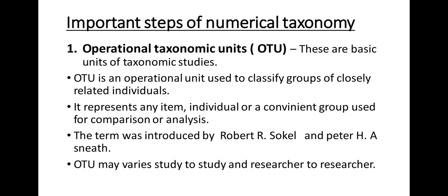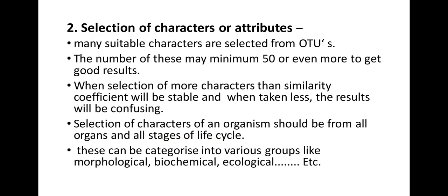Important steps of numerical taxonomy begin with Operational Taxonomic Units (OTUs), which are the basic units of taxonomic studies. An OTU is an operational unit used to classify groups of closely related individuals, representing any item, individual, or convenient group used for comparison or analysis. The term was introduced by Robert R. Sokal and Peter H. Sneath. OTUs may vary from study to study and researcher to researcher. Many suitable characters are selected from OTUs — a minimum of 50 or even more to get good results.